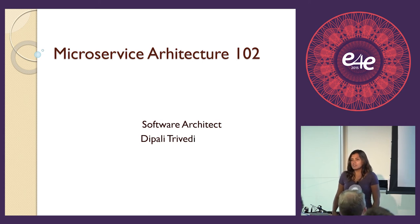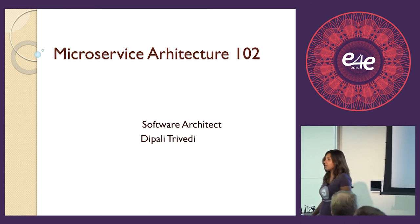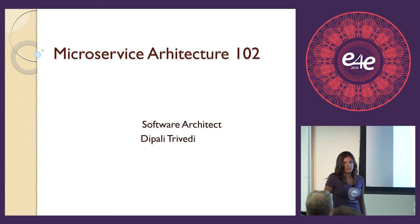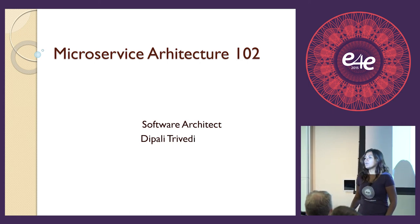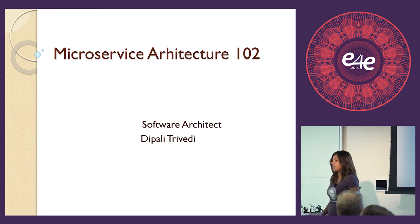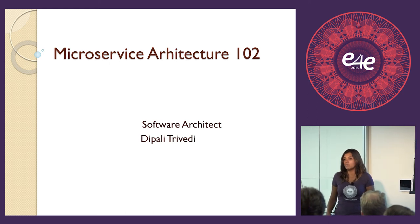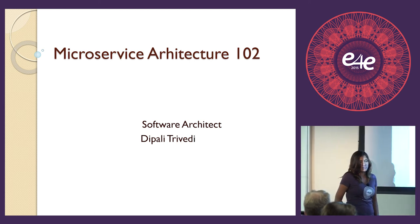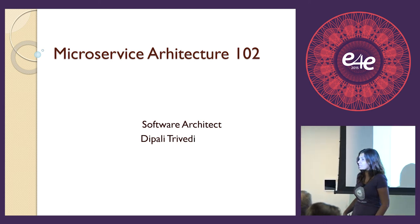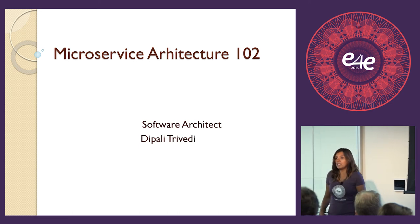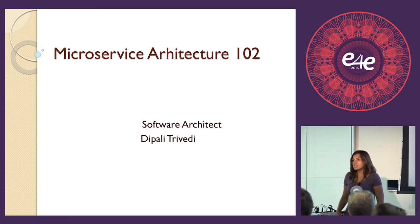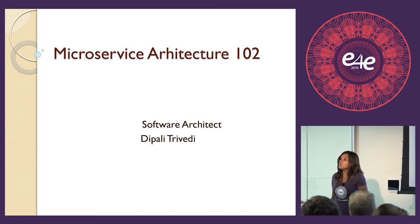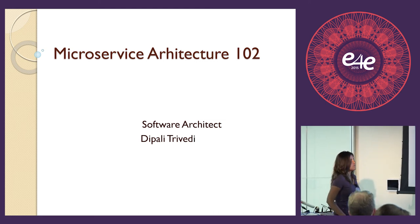During all these years, what I realized is that if you are developing a product or an application for hundreds or thousands of users, your architecture is very different versus a product that is public-facing, internet-facing, and will have millions of users. So if you are working on a product with millions of users, many transactions per second, security requirements, and a mobile app, your architecture will be very different from an internal application. That is what we are going to talk about today — microservice architecture.